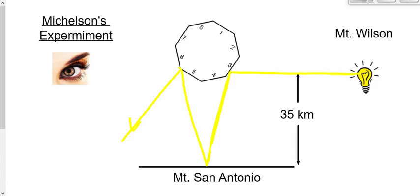So, in the first case that I just showed you, it hadn't been rotated enough during the time that it took the light to go from one mountain to the other and back again.